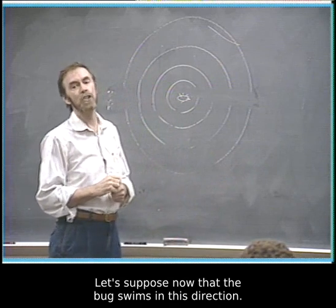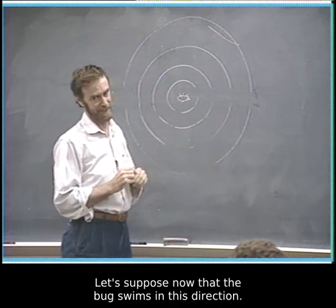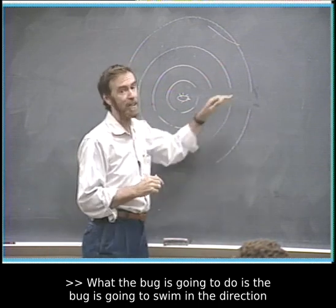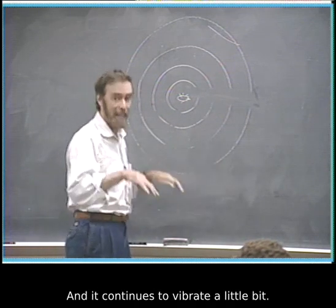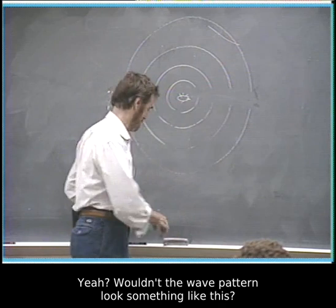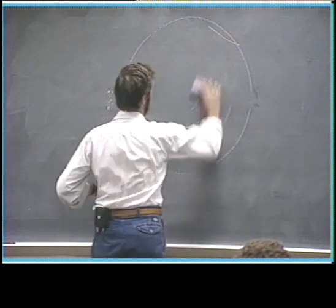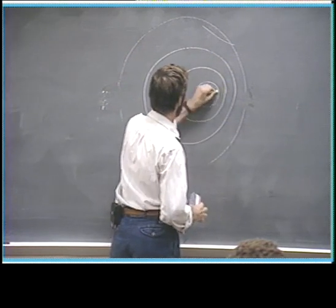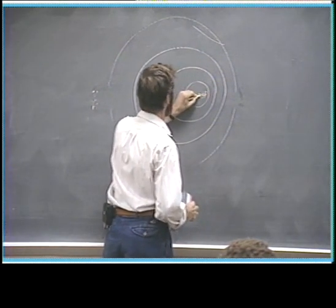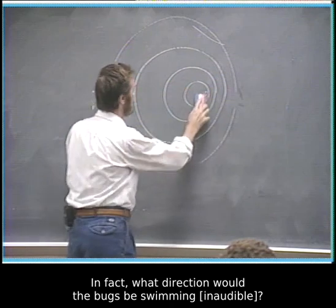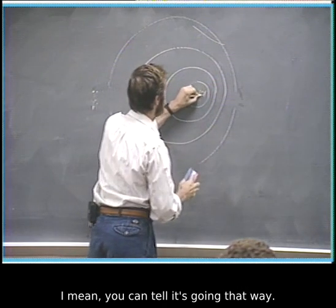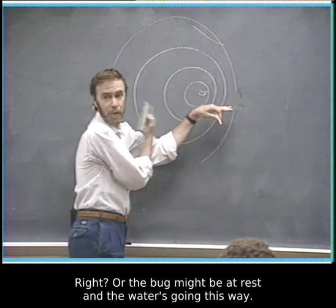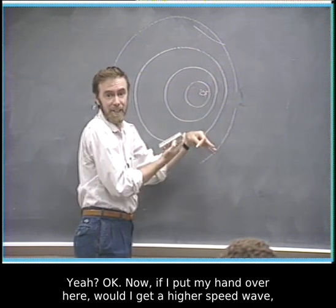Let's suppose now that the bug swims in this direction. What the bug is going to do is the bug is going to swim in the direction of the waves that it's producing. And it continues to vibrate a little bit. Wouldn't the wave pattern look something like this? Can you kind of be seeing that? In fact, what direction would the bug be swimming, gang? I mean, you can tell it's going that way, right? Well, the bug might be at rest and the water's going this way. I mean, motion is relative anyway.